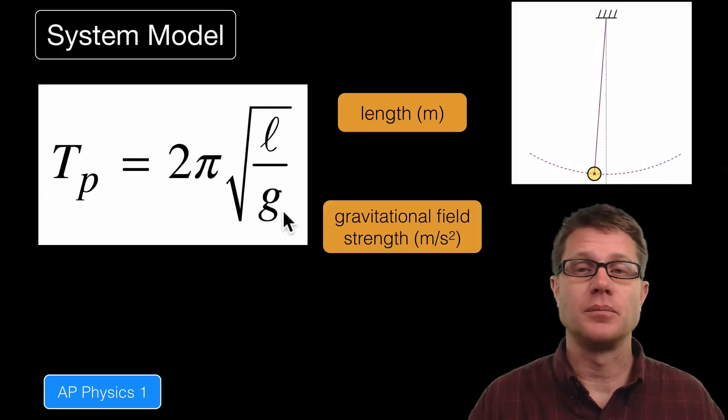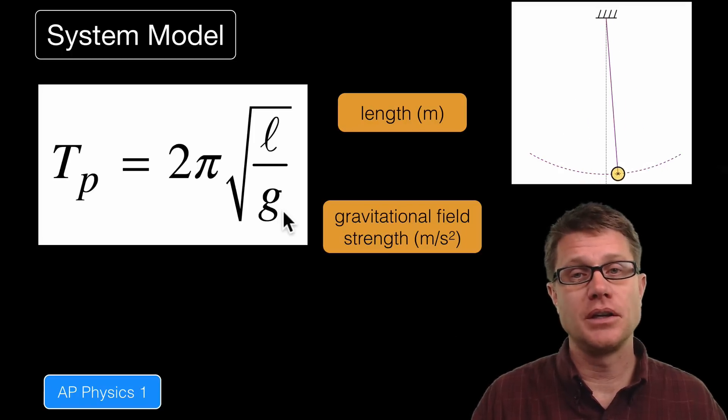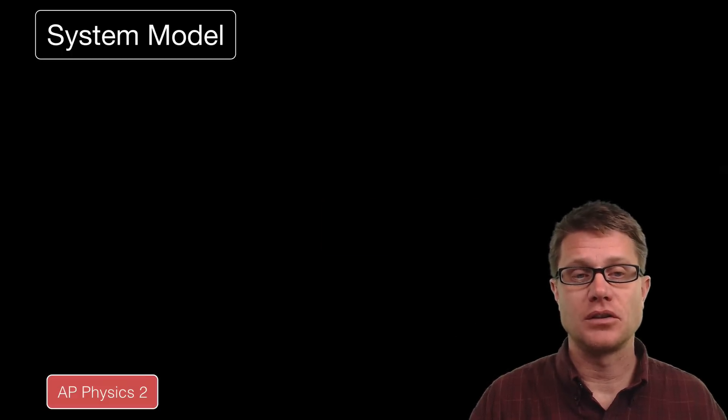So on Jupiter for example it would be moving back and forth really quickly. But on the moon it would be moving really slowly.